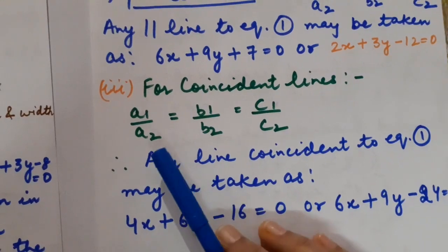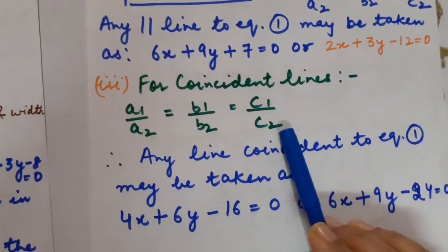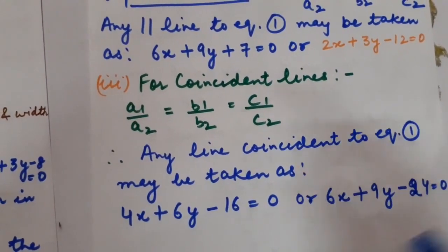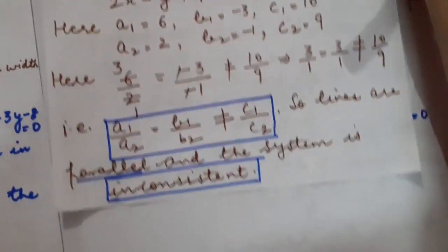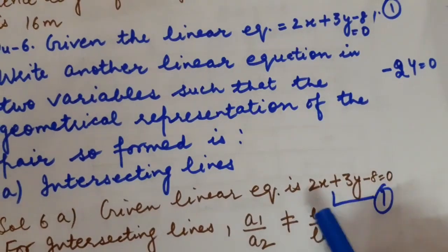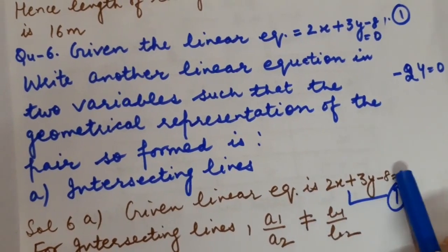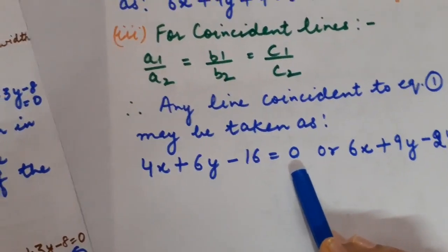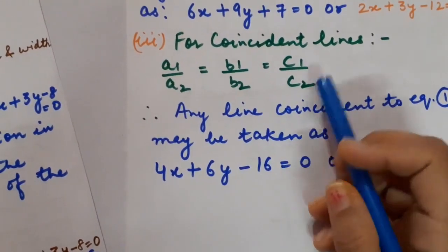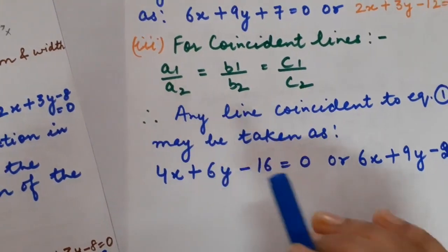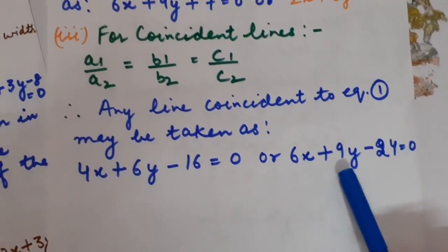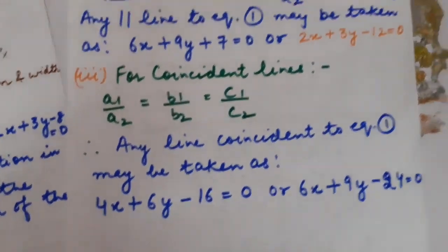For coinciding lines, the condition is a1/a2 = b1/b2 = c1/c2. You can take a multiple of the original equation. Multiplying 2x + 3y − 8 = 0 by 2 gives 4x + 6y − 16 = 0. Multiplying by 3 gives 6x + 9y − 24 = 0. In both cases all three ratios are equal, satisfying the coincident lines condition.